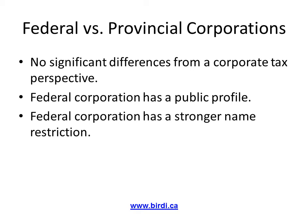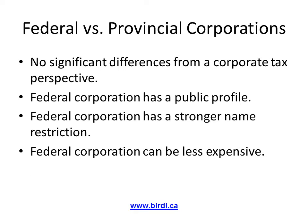A federal corporation has stronger name restrictions when registering — no other corporation in all of Canada can have the same company name. With a provincial corporation, the same or very similar name can be registered in a neighboring province. Since a federal corporation can be registered online at Industry Canada's website, it can be more cost-efficient compared to a provincial corporation, which is usually handled through a lawyer or accountant.